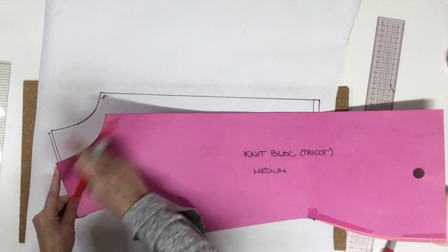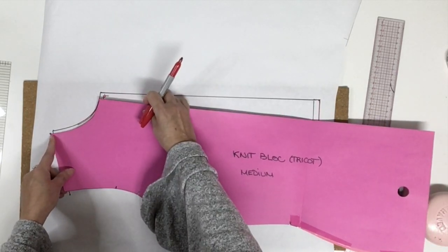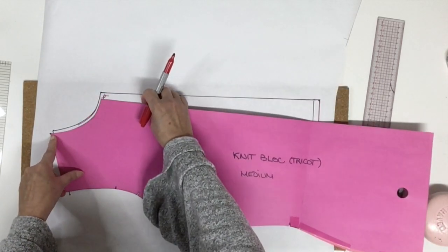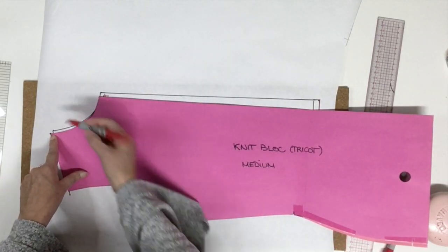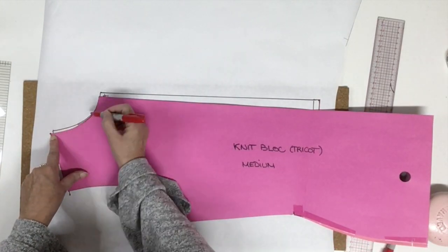Now this time we're going to place the corner on the new size and again pivot until you touch, but this time the new line, and we trace the last part.